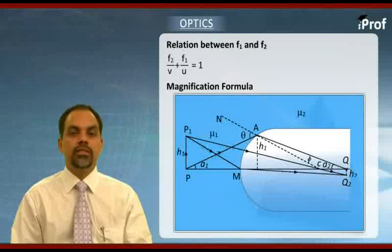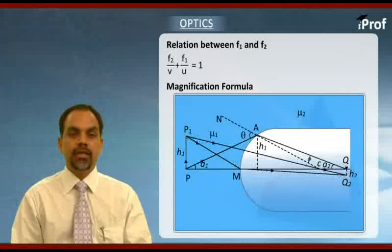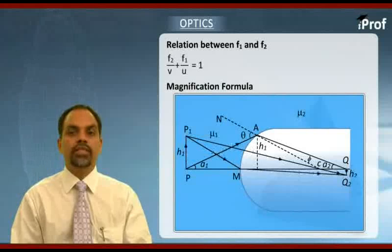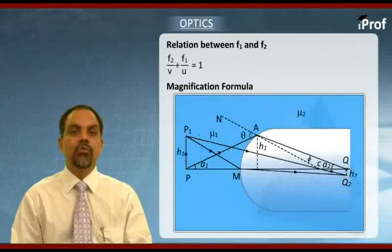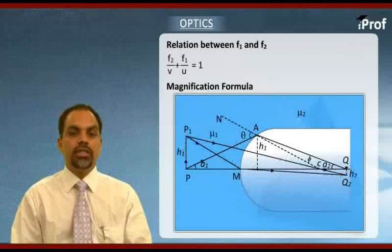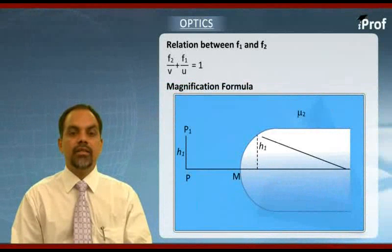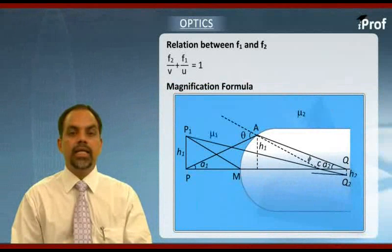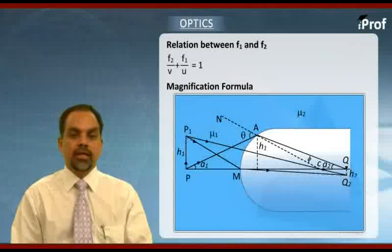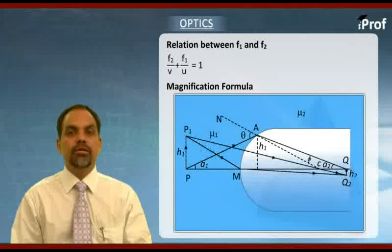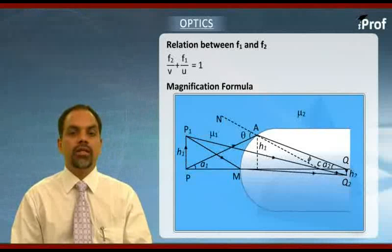Q is the corresponding image of point p. Similarly, we can consider two rays from the tip of the object that is p1. We consider one ray passing through center of curvature. We know by definition any ray passing through center of curvature will go undeviated. We take another ray from p1 and it is hitting the pole which is m in this case. It is refracted into the denser medium and angle of refraction will be definitely lesser than angle of incidence. Then we look at the meeting of these two refracted rays which meet at point q1.